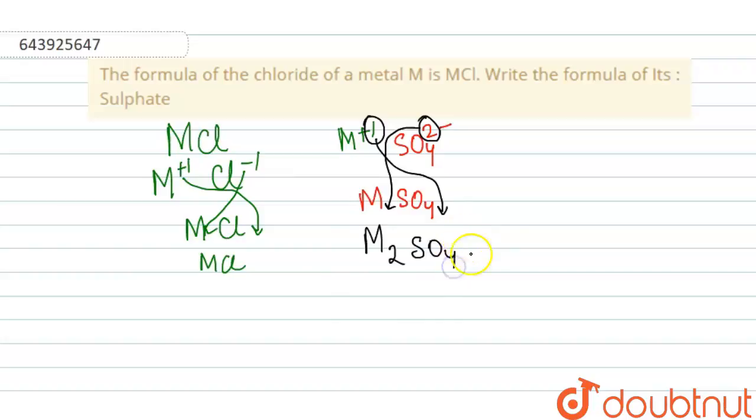The subscript one is not required to be written because even if SO4 is written, we understand that there is one ion of sulfate. So this is your complete answer. This is the way you write the formula of another compound using one compound.